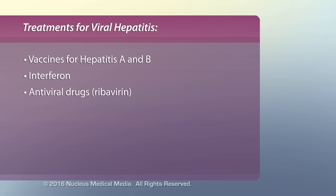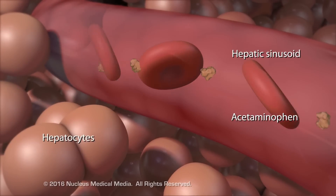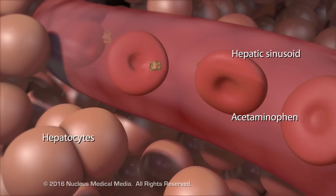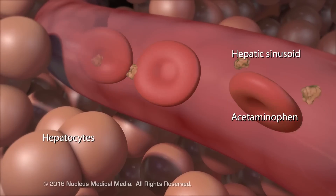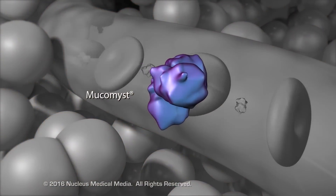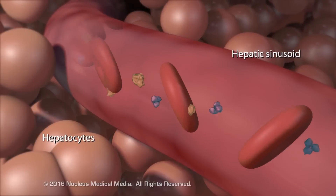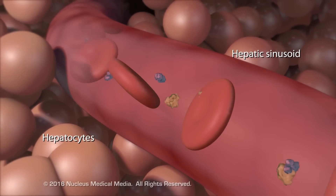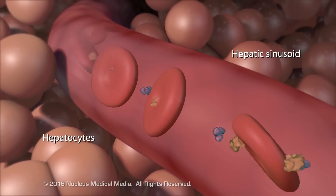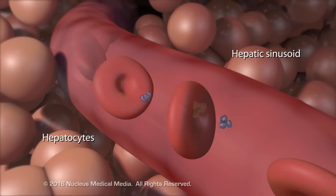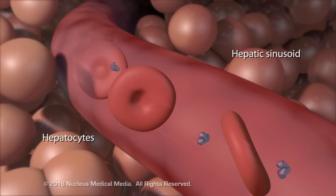Interferon and other antiviral drugs, such as ribavirin, block the replication of viral hepatitis. When acute liver failure is caused by an overdose of acetaminophen, it is treated with N-acetylcysteine, commonly known as mucomyst. If administered shortly after an overdose, mucomyst helps the liver safely excrete acetaminophen metabolites.